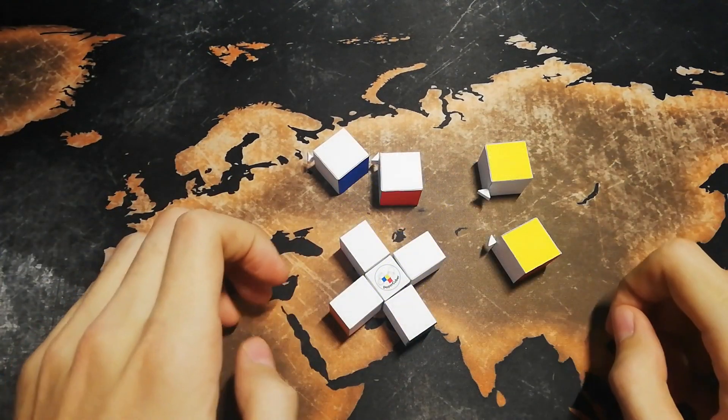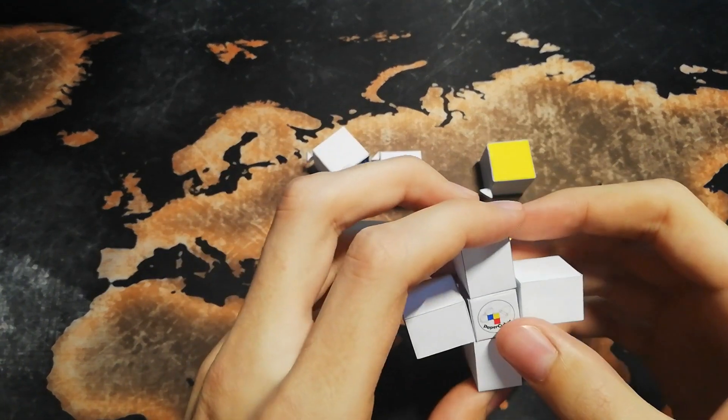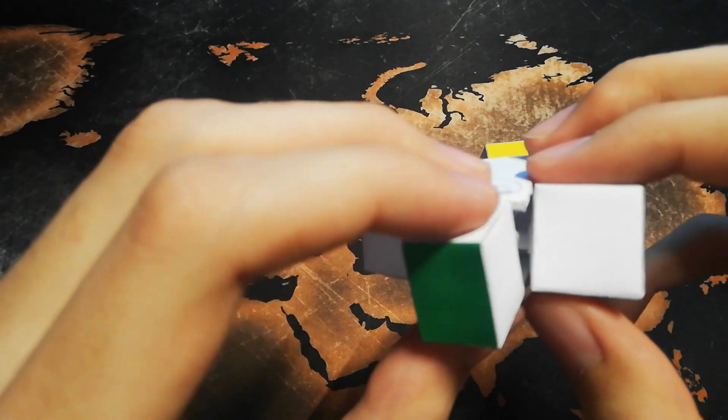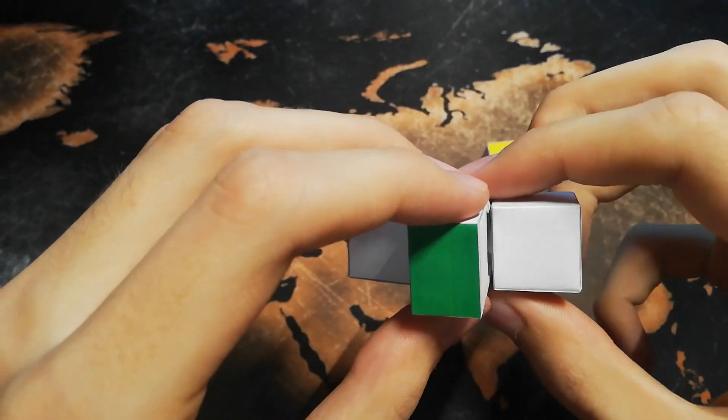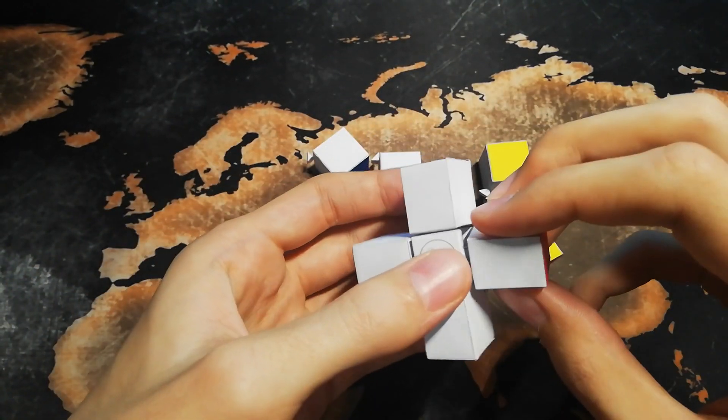Now let's have a look at the mechanism. We have one middle piece here that can't move. The four axes are glued to this piece, like you can see in here. And the four centers, these four, are attached to the axes.